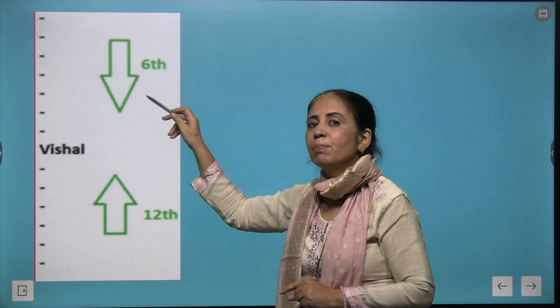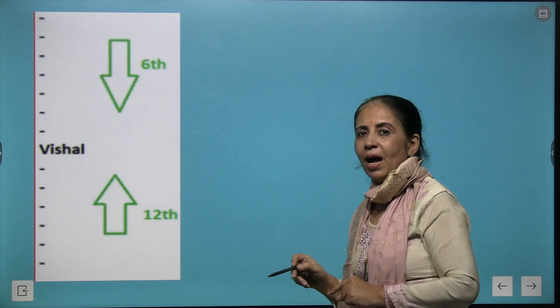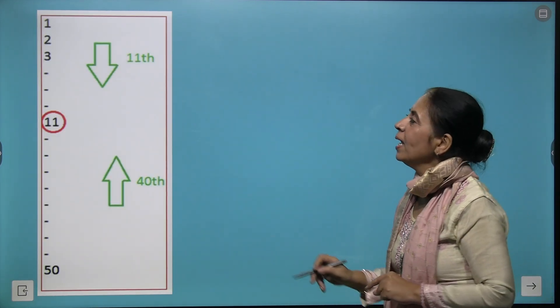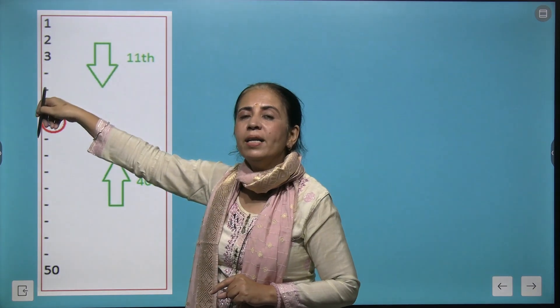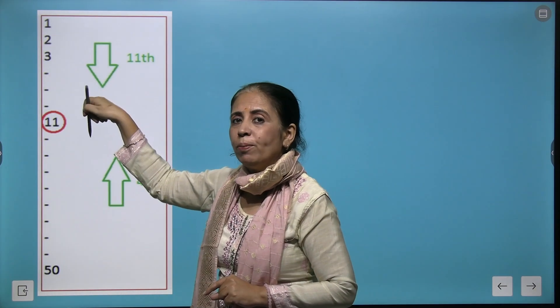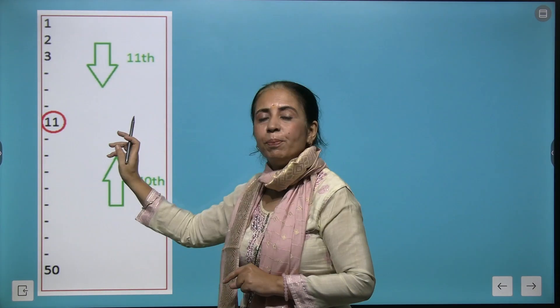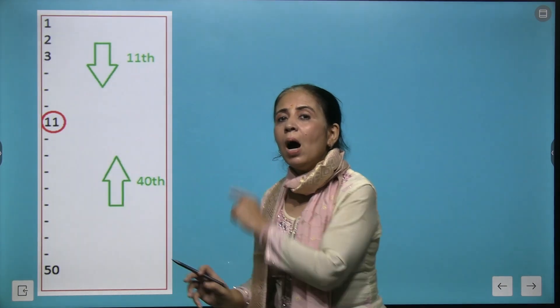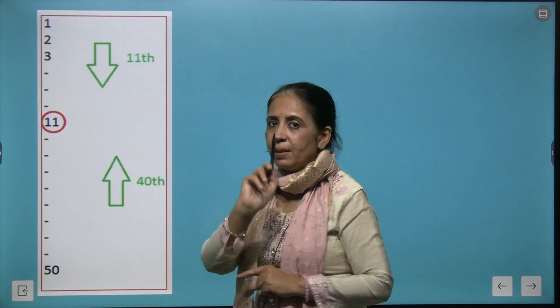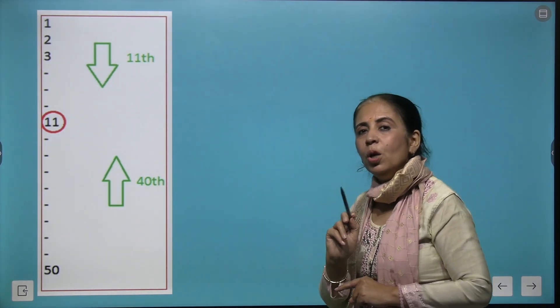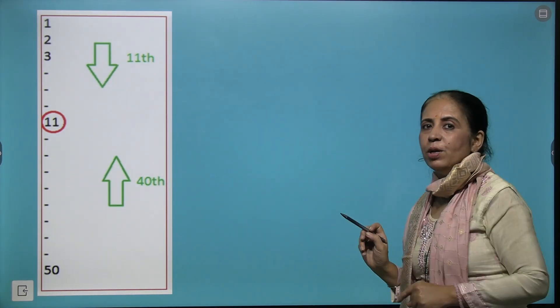That gives you 12 plus 6 minus 1, and we got the answer 17. Further, if a child is at 11th position from the top and 40th position from the bottom, how many children are standing in a row? You will add both of them and subtract one. 40 plus 11 minus 1 gives you 50.